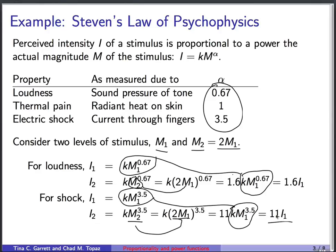So in the end here, we get out 11 times the original perception. That is, for electroshock, if you double the strength of the shock, the subject will perceive it to be 11 times stronger, much more than it actually increased. And these are the kinds of behaviors that you get with power functions.